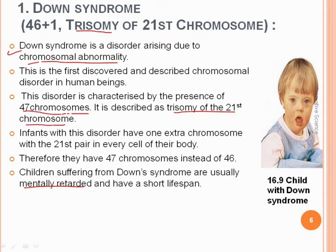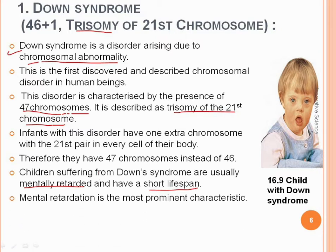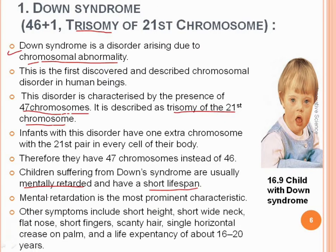Children suffering from Down syndrome are usually mentally retarded and have a short lifespan. Mental retardation is the most prominent characteristic of Down syndrome. Other symptoms include short stature, short wide neck, flat nose, short fingers, scanty hair, a single horizontal crease on the palm, and a life expectancy of about 16 to 20 years.